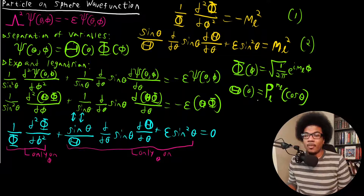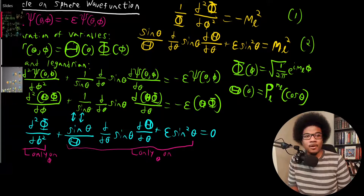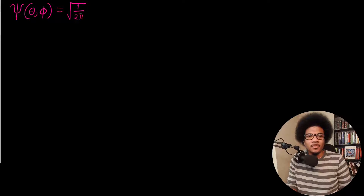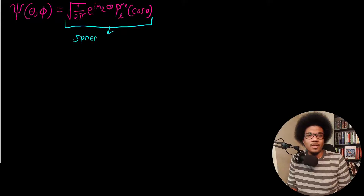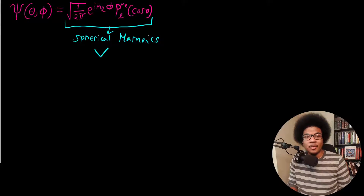We're going to make use of both solutions. Via separation of variables, the only thing left to do is put those together to get our wave function. Our wave function is a function of theta and phi — it's the particle-on-a-ring solution, e to the i M sub L phi, times the Legendre polynomials from the second solution. Together, these solutions are known as the spherical harmonics.